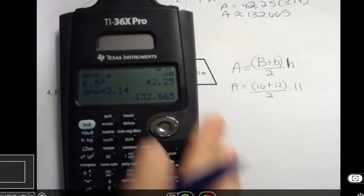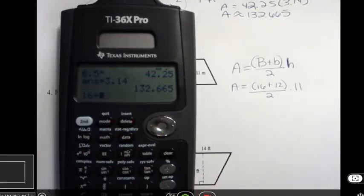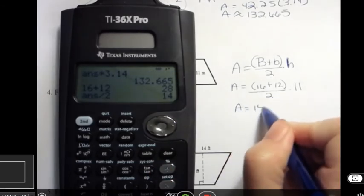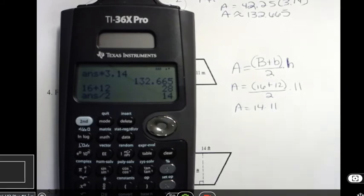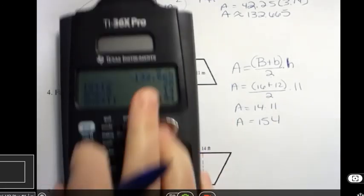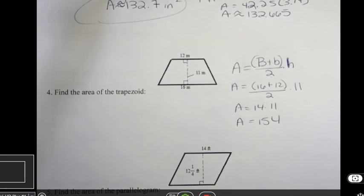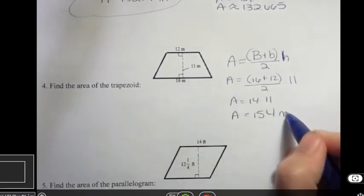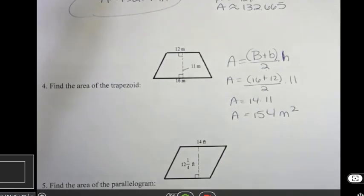So if I multiply, if I add 16 and 12, I get 28. And divide by two, I get 14. 14 times 11 is going to be 154. And then I need to decide what my unit's going to be. Well, I'm going to use the unit meters that I started off with, but because it's area, it's going to be meters to the second power.